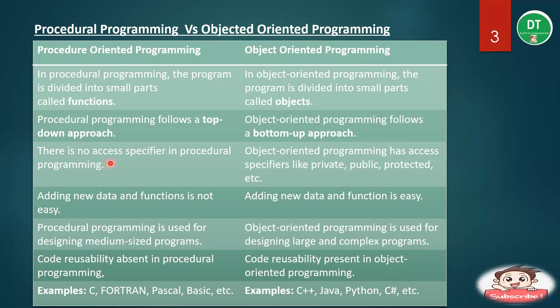In procedural programming, data is accessible from anywhere in the program with no access specifier. But in object-oriented programming, we have access specifiers. An access specifier defines which variable or data entity is accessible from where — who can access it and who cannot. The examples of access specifiers are private, public, protected, etc.